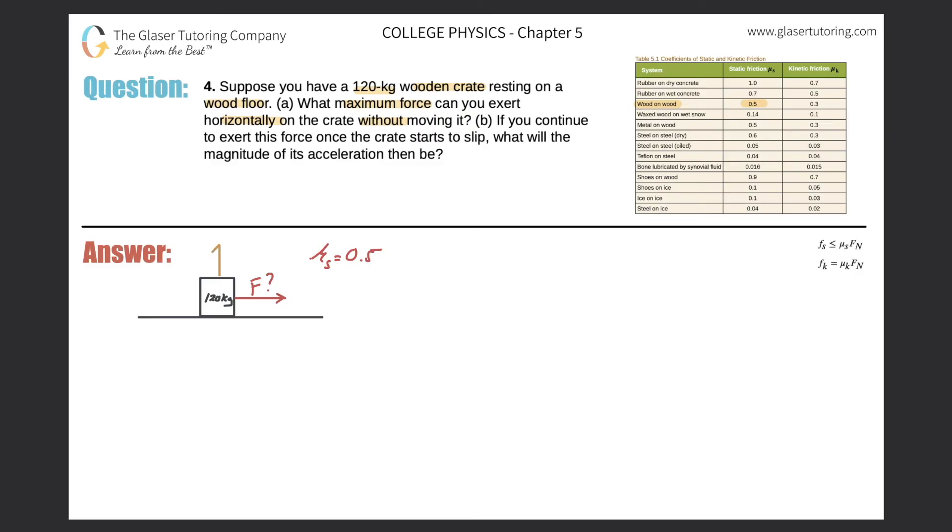Now, I haven't detailed any forces pointing down. So there has to be some force pointing down. Remember, that would just be the weight of the block. So that's fairly straightforward. So the weight of the block would be equal to mg. And the mass is 120. Gravity is 9.8.